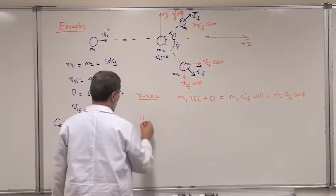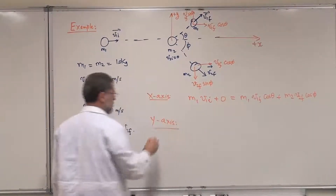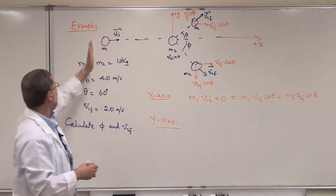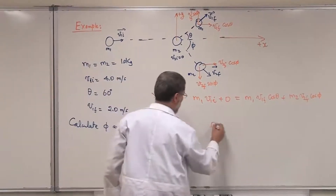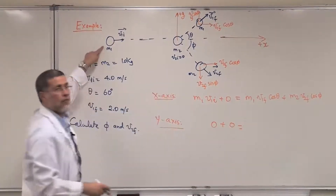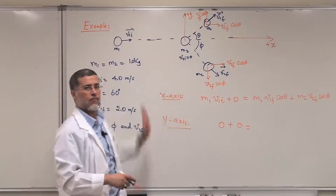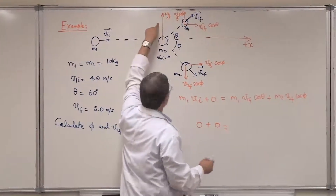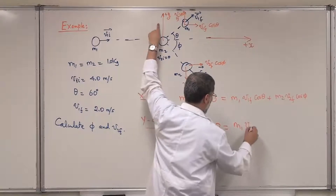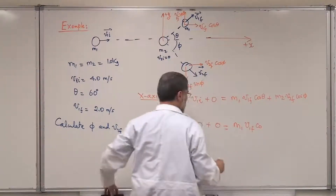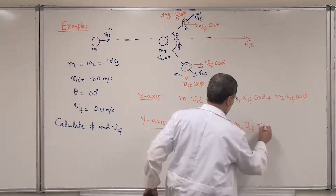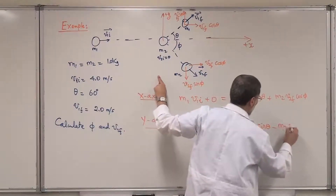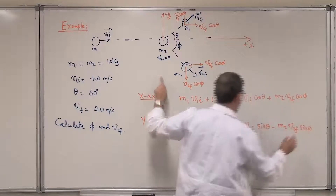Along the y-axis, before the collision there is no y-component — M1 has no y-velocity and M2 is at rest, so it's zero plus zero. After the collision, M1 contributes M1·V1 final·sinθ upward, and M2 contributes minus M2·V2 final·sinφ downward.